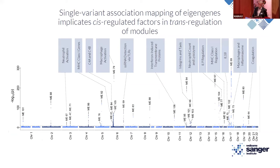We took all module eigengenes and performed single-variant association mapping across the genome using the same model as our cis-eQTL. We used a hypothesis-driven approach, including only e-SNPs detected from our cis-eQTL analysis and any lead variant from the eBI GWAS catalog — around 70,000 SNPs tested in this scan. We identified many different associations for different module eigengenes.